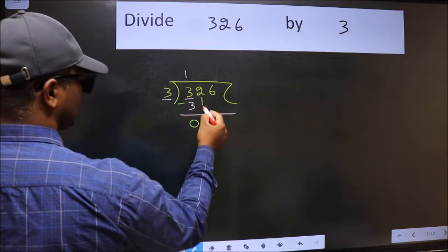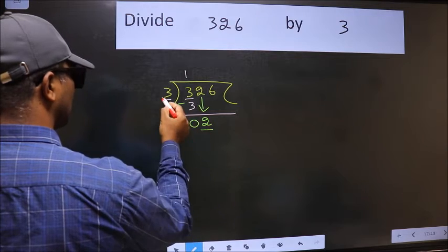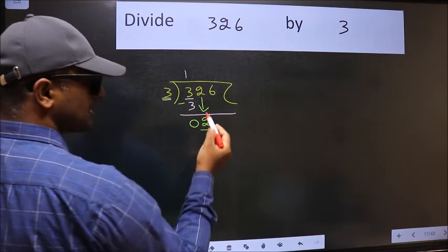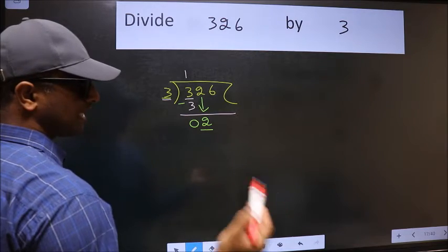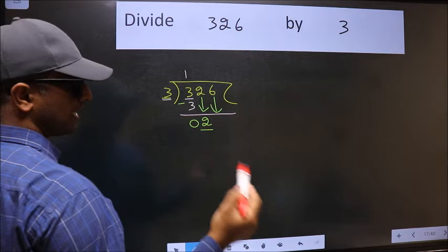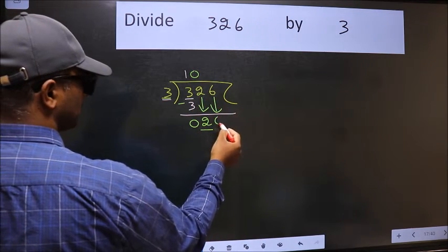After this, bring down the beside number. So 2 down. Now here we have 2 and here 3. 2 is smaller than 3, so we should bring down the second number. And the rule to bring down the second number is we should put 0 here. Then only we can bring down this number.